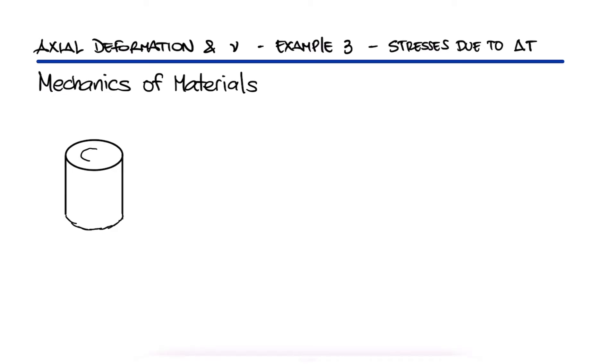Both the brass core and the fully bonded aluminum shell are unstressed at a temperature of 25 degrees Celsius. Considering only axial deformations, what is the stress in the aluminum and what is the stress in the brass when the temperature reaches 205 degrees Celsius?